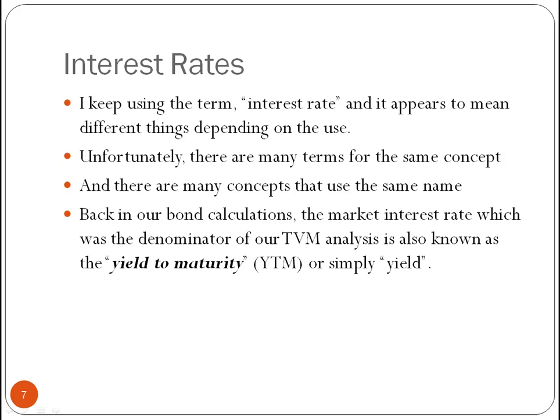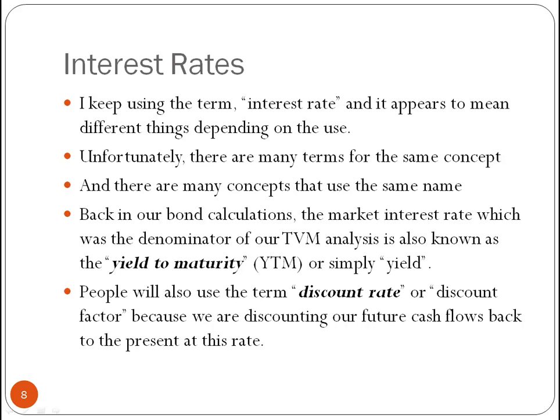I want to try and define certain terms more narrowly. For example, back when we were looking at bond calculations, the market interest rate — which was the denominator — we mentioned the discount rate in our time value of money analysis. That was also known as the yield to maturity, the YTM, sometimes just called the yield. We can think of it as the yield to maturity if we hold the bond to maturity. We'll also use the term 'discount rate,' which is a very common substitution for the interest rate in the denominator of the time value of money calculation.